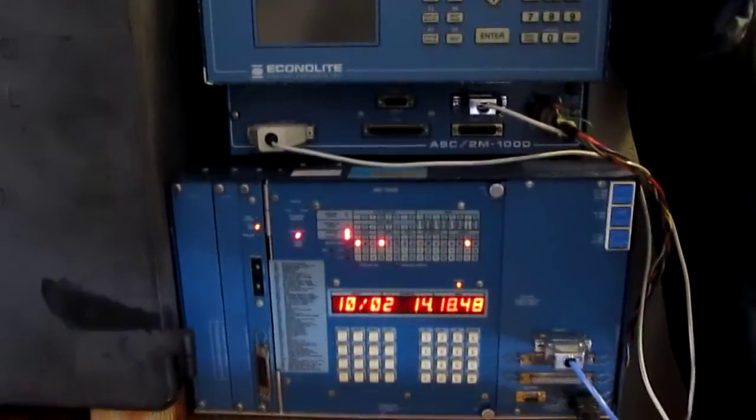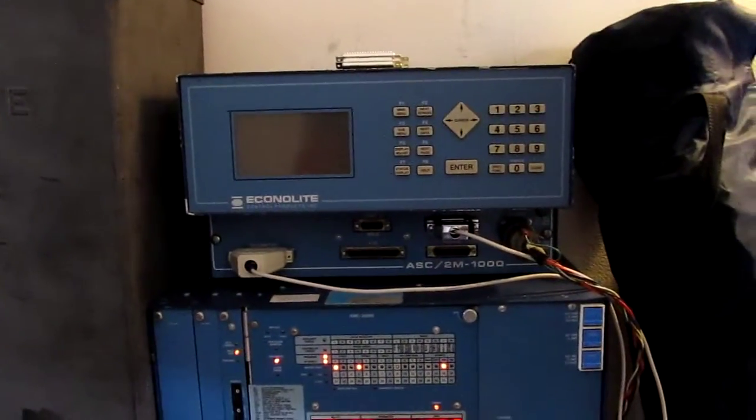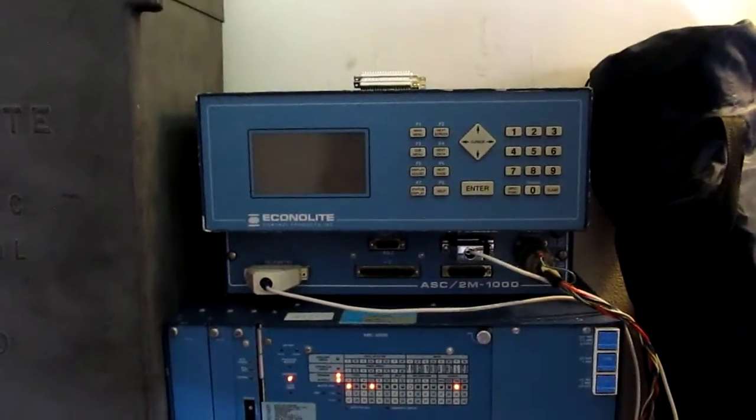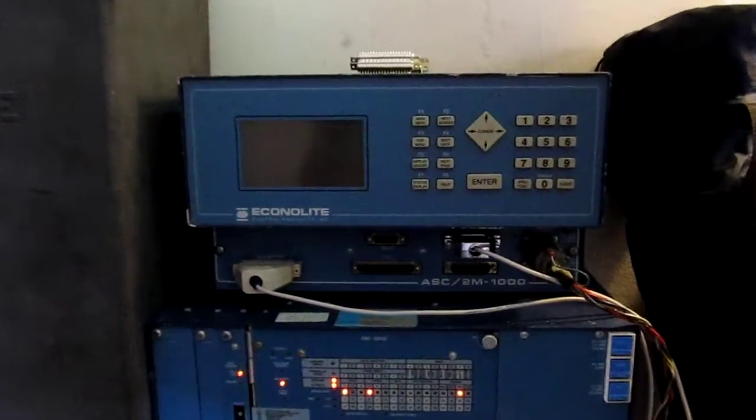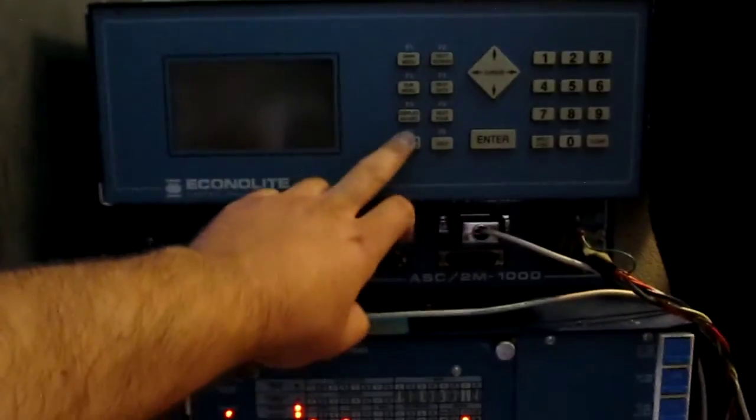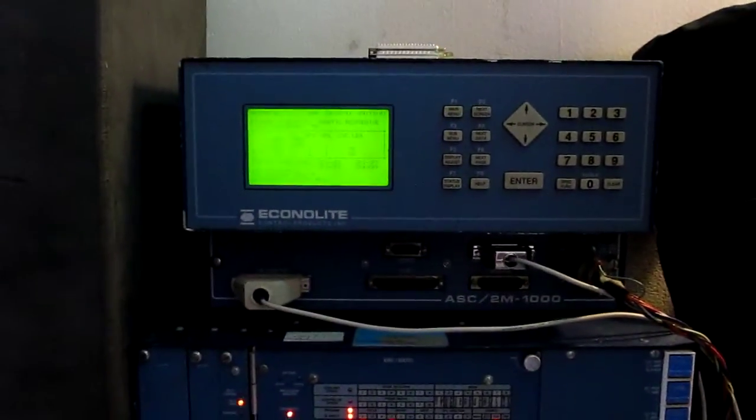Then down here, we have the two Master controllers. Now, on the top is an ASC-2N, as you see by Econolite. That is the Master that sends commands to the ASC-8000 controller you saw in the other room, the so-called Playroom.